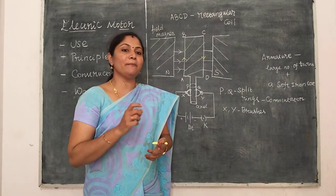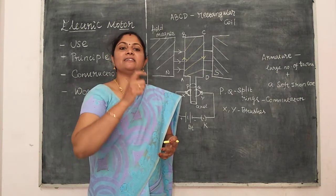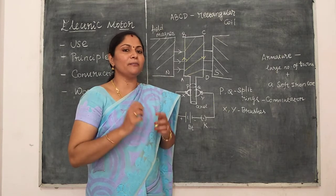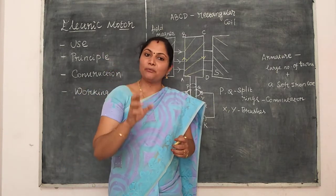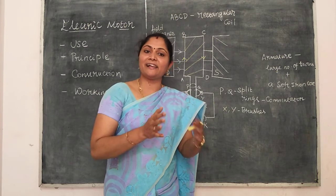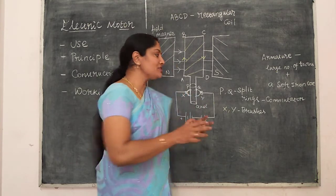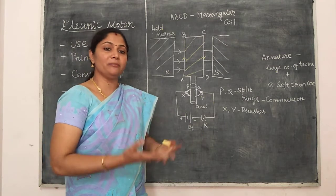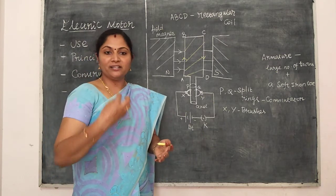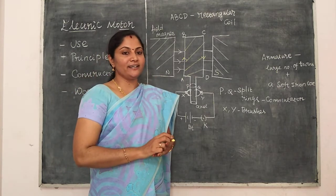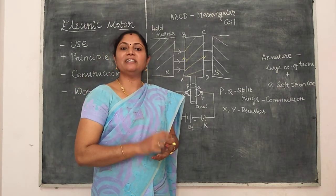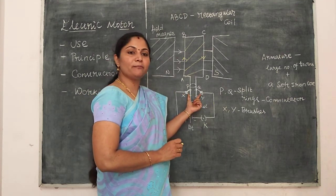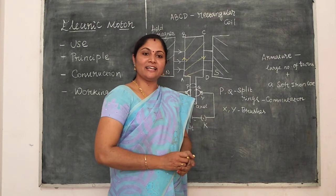Remember these two concepts to improve or enhance the power of the electric motor in high power motors. One important concept: split rings act as a commutator in an electric motor. A commutator is a device which reverses the direction of current without changing the polarity of the terminals of the battery. Split rings act as a commutator.